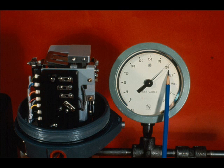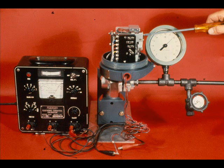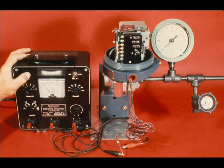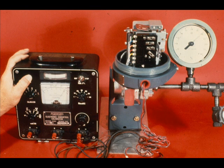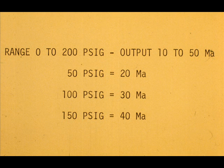With zero pressure input to the transmitter, adjust the transmitter zero for 10 milliamps output. With 200 PSIG input, adjust the span to give 50 milliamps output. Repeat the zero and the span adjustment until the zero to 200 PSIG calibration is correct.